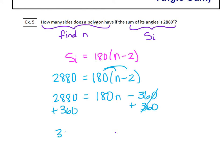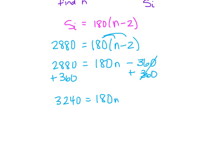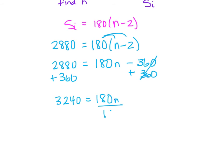That gives us 3,240 is equal to 180n. And then you guys know how to get rid of the 180. We're just going to divide both sides by 180. And we get 18 is equal to n.